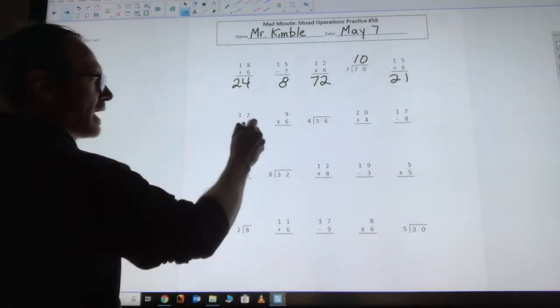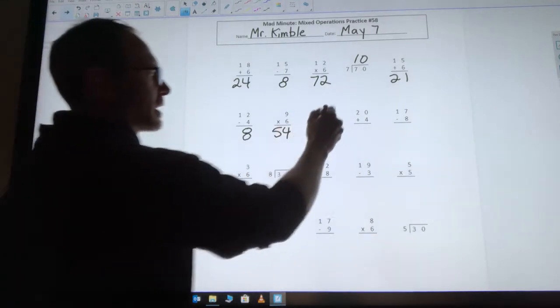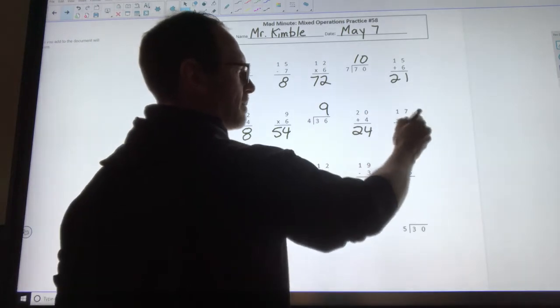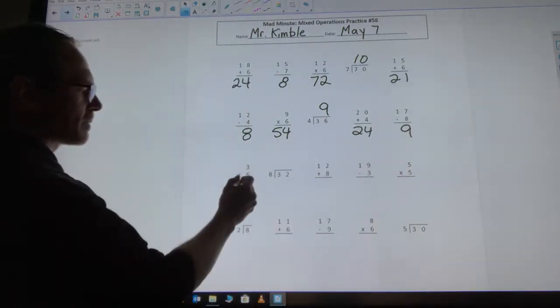12 minus 4 is 8. 9 times 6 is 54. 36 divided by 4 is 9. 20 plus 4 is 24. 17 minus 8 is 9. 3 times 6 is 18.